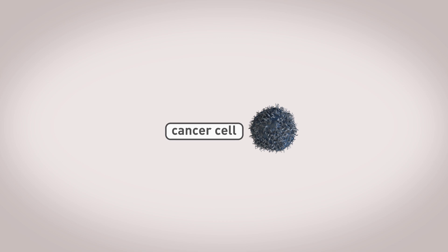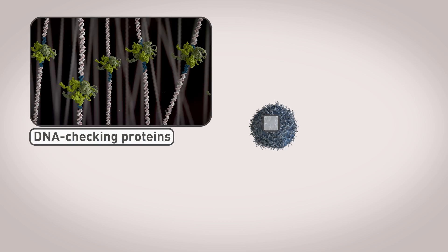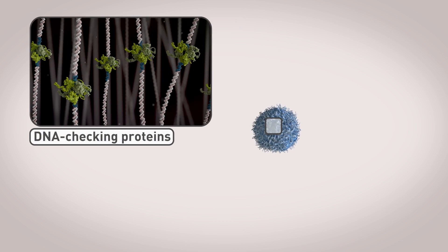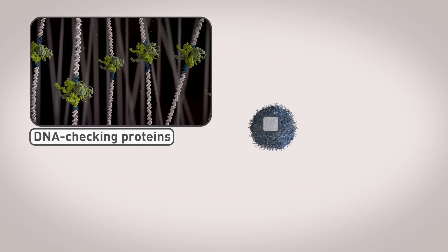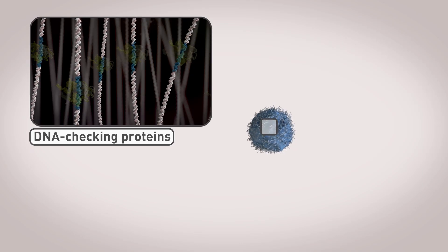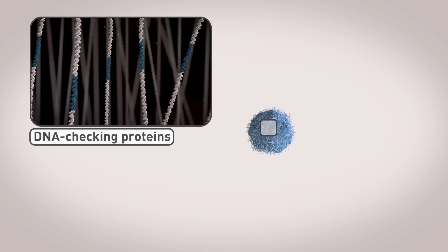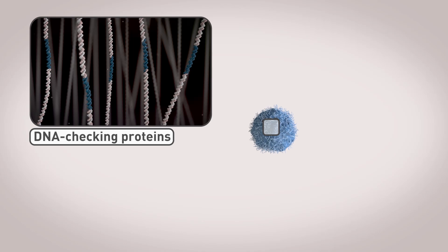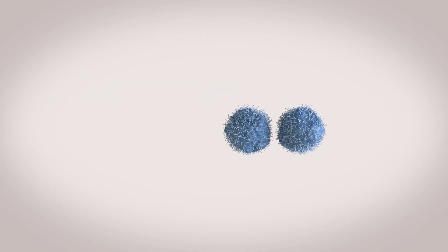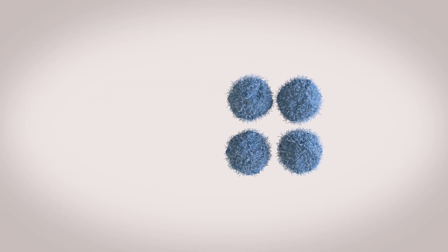Researchers at the Francis Crick Institute and UCL, led by Charlie Swanton, have identified new ways in which cancer cells can get round these DNA checking proteins. One way in which this can happen, they have found, is by blocking a fail-safe that causes cells with faulty DNA to self-destruct.